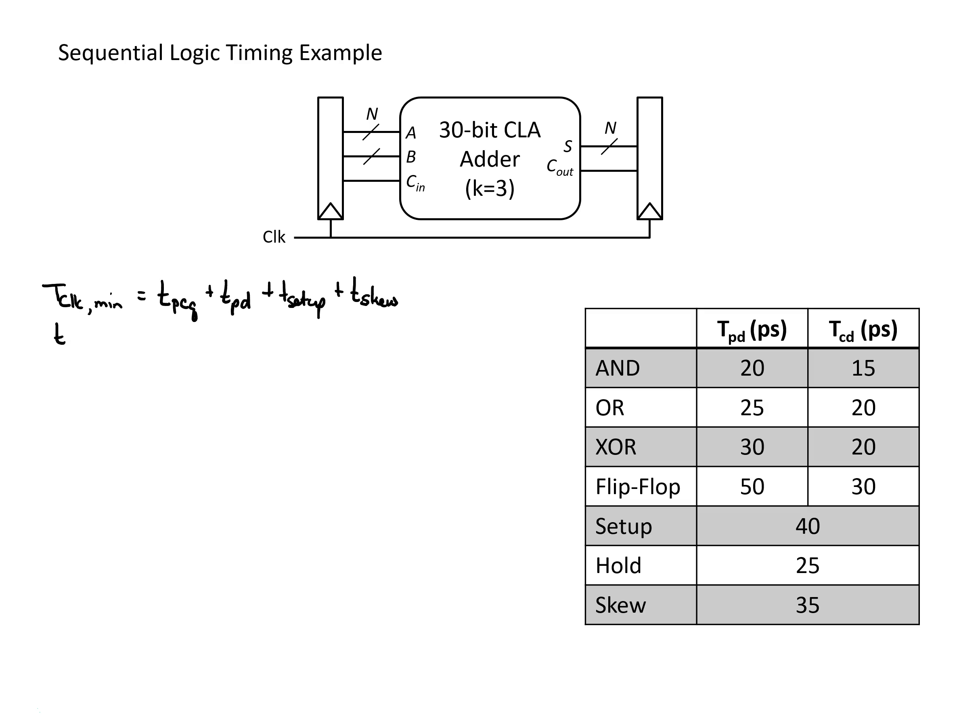In another video it was found that the propagation delay for this 30-bit carry lookahead adder with 3-bit blocks was found to be the max of either an AND gate or an OR gate, two times the delay of an AND plus an OR gate, nine times the delay of an AND plus an OR gate, and then finally three times the delay of an AND and an OR gate.